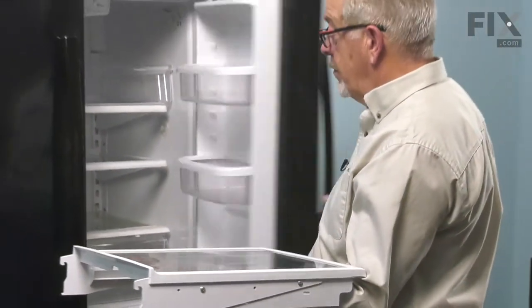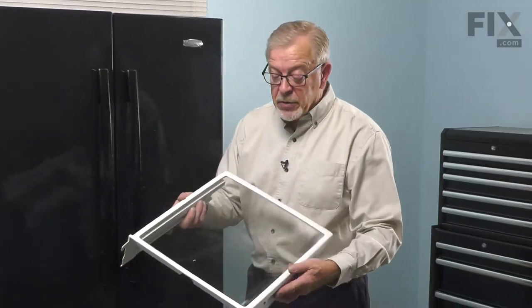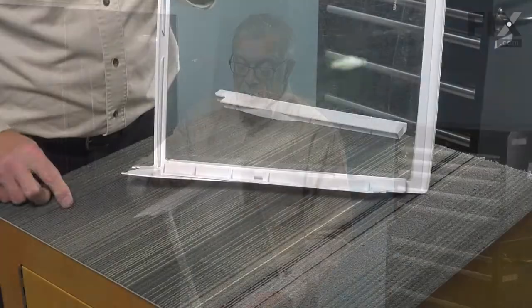We'll then close up the refrigerator and we'll take the shelf to a suitable work surface where we can change out that glide.